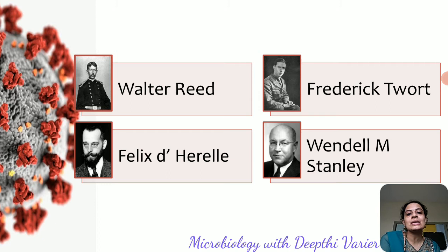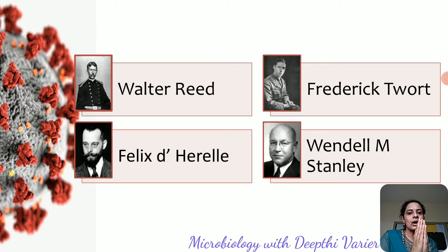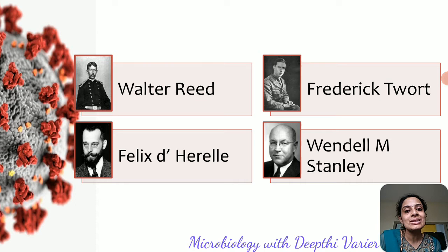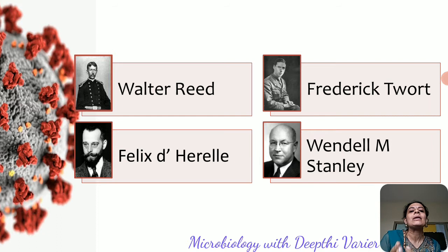In 1933, Schlesinger, a chemist, gave us the chemical composition of a virus. He said that viruses are not like bacterial cells — they are simply made up of protein and nucleic acid. The concept that viruses are not cellular but composed of certain chemical compounds was established by Schlesinger. Then in 1935, Wendell Stanley showed that viruses can be crystallized — they are particulate and made of protein — and he was the first to isolate tobacco mosaic virus in a crystallizable form.